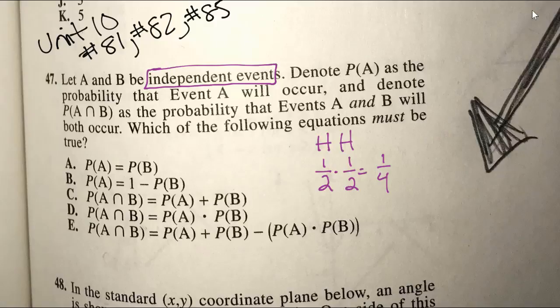So the formula down here that shows product is D. Let me touch on a few of these other ones. So option A says that the probability of A is equal to the probability of B. That just shows you that the probabilities are equal. That has nothing to do with both occurring at the same time.